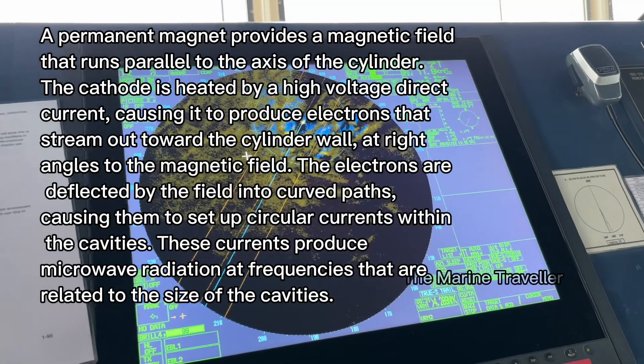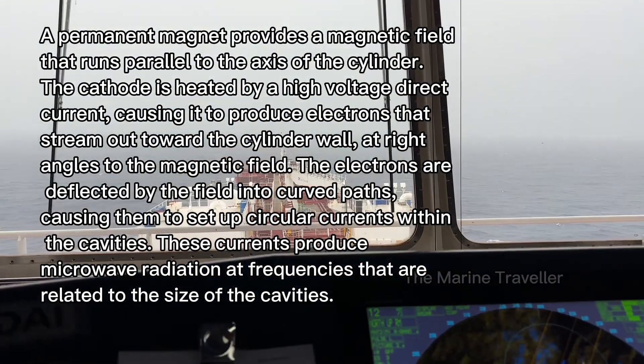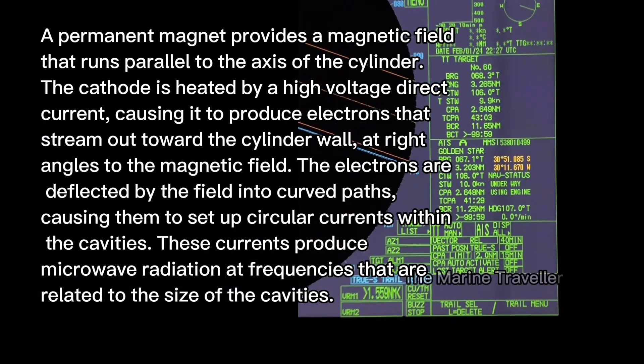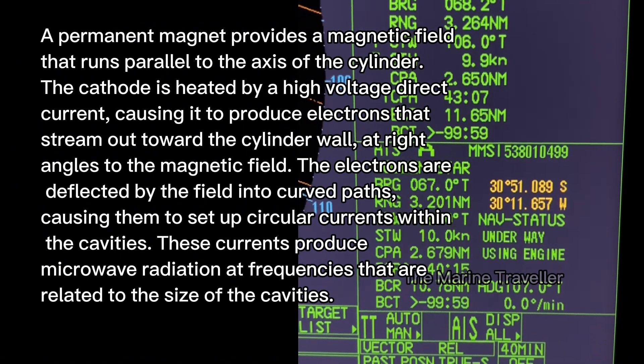The electrons are deflected by the field into curved paths, causing them to set up circular currents within the cavities. These currents produce microwave radiation at frequencies that are related to the size of the cavities.